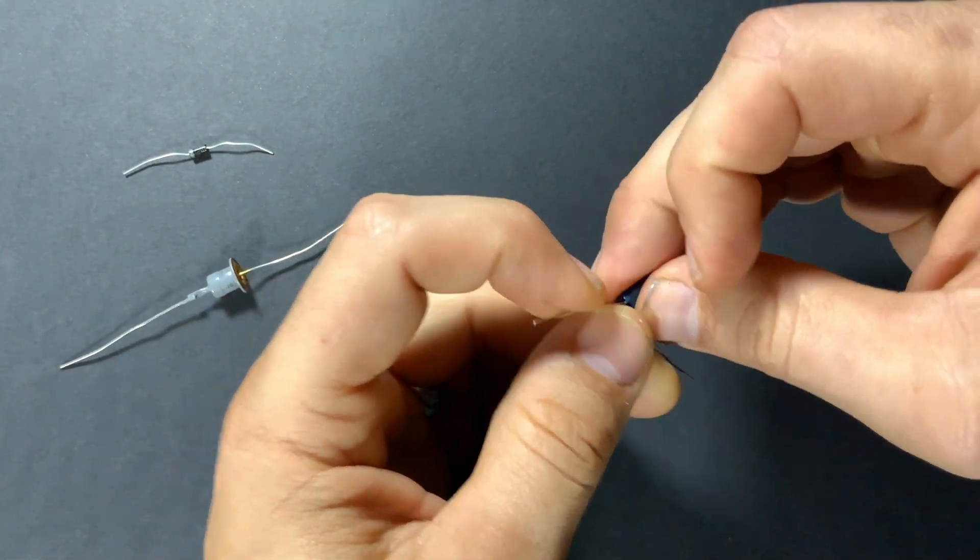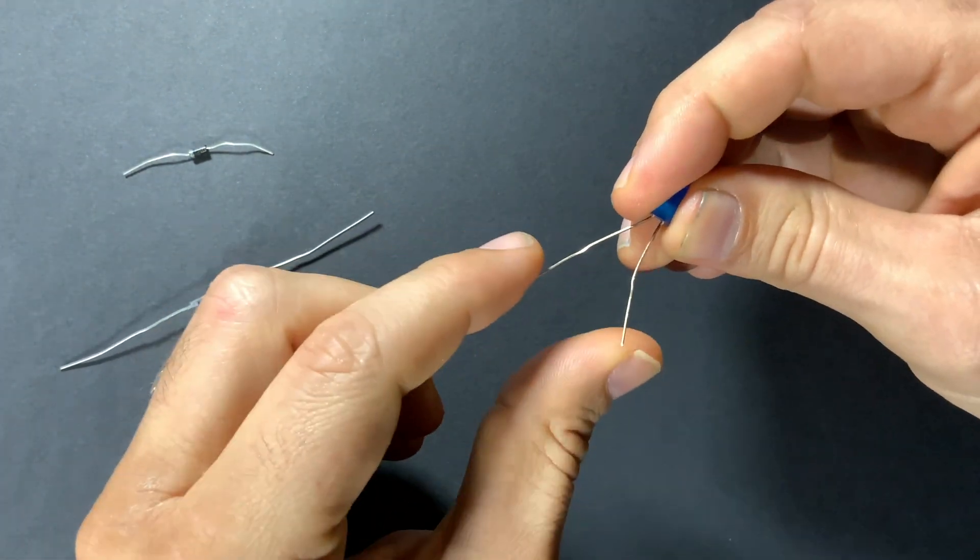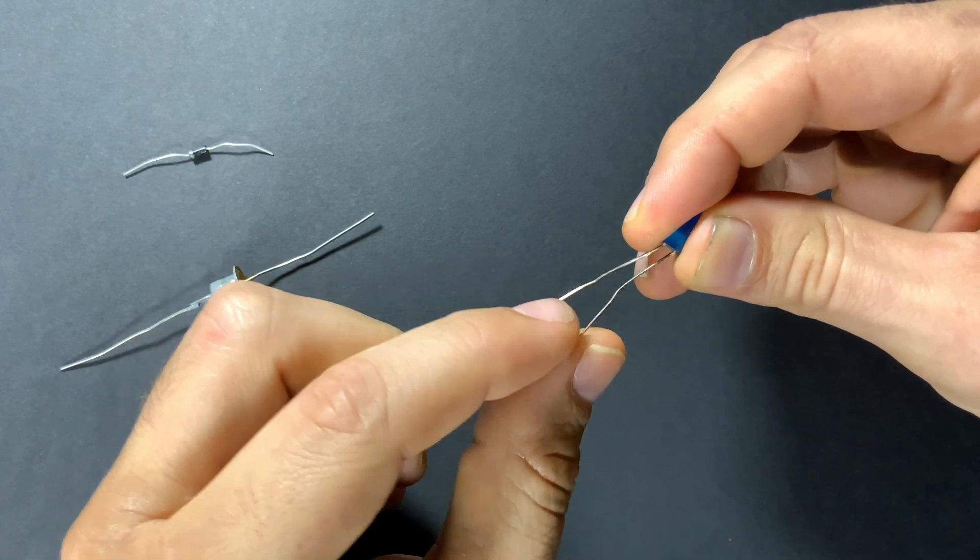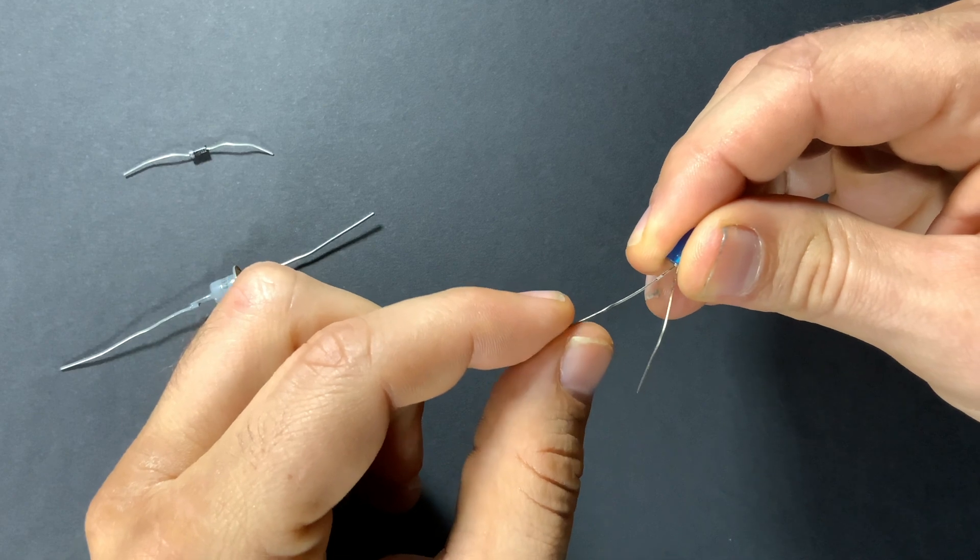And with the LED assuming you haven't trimmed the legs already you can look for what is the shorter leg. In this case it's this one over here. So the shorter leg represents the cathode.